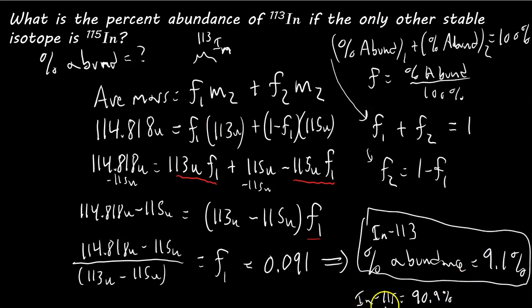So, it's much more abundant in indium 115. And, the average mass here is 114.8. So, it's closer to 115 than it is to 113 because the 115 isotope is more abundant.